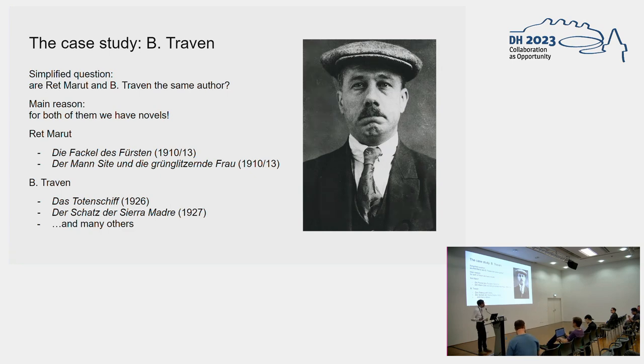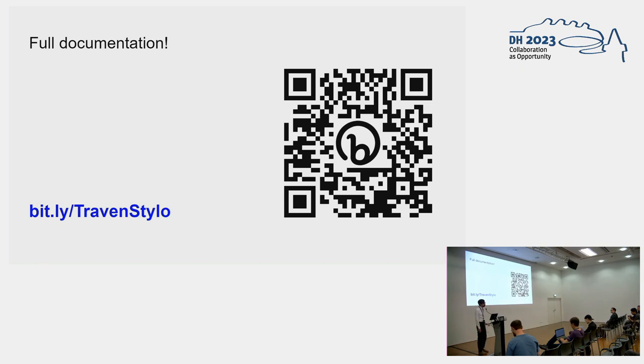What I will do in this paper is compare the only two novels that are known by Rett Marut with the first two novels by Traven that are at least the closest in chronological terms. If you want to see all the documentation about this project, the scripts and the slides, you can use this QR code or go to this link: bit.ly/TravenStylo with capital T and capital S.